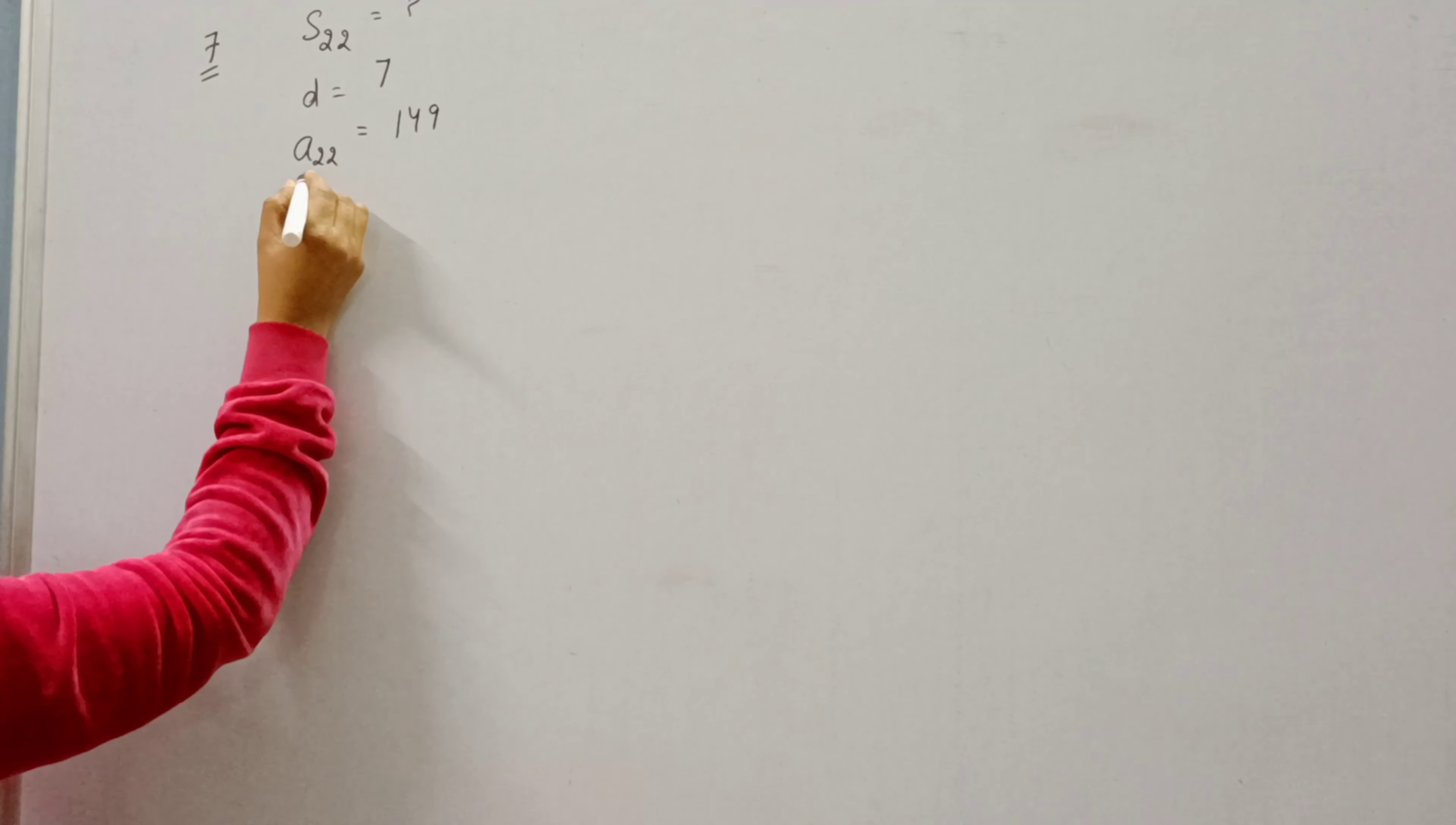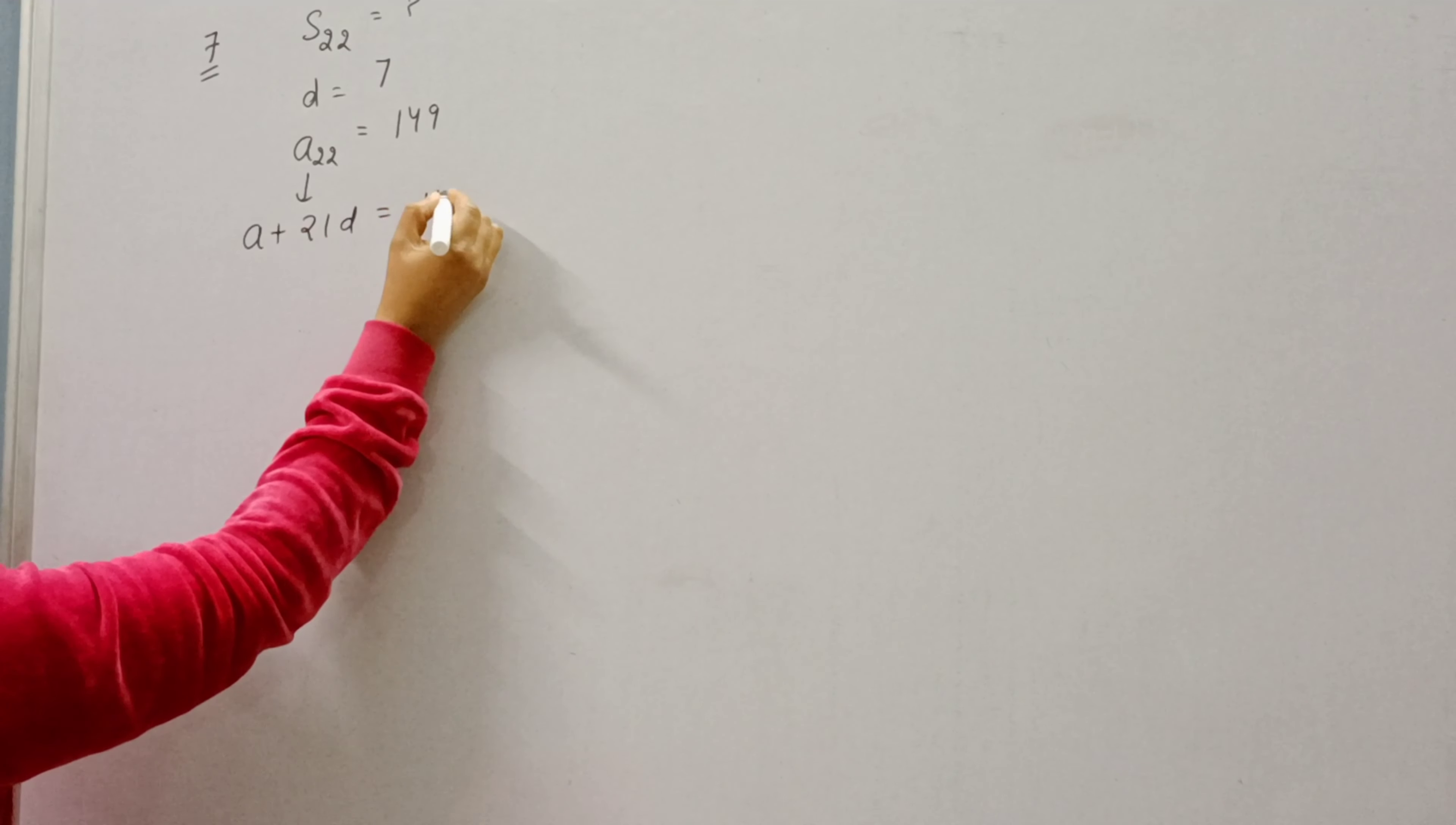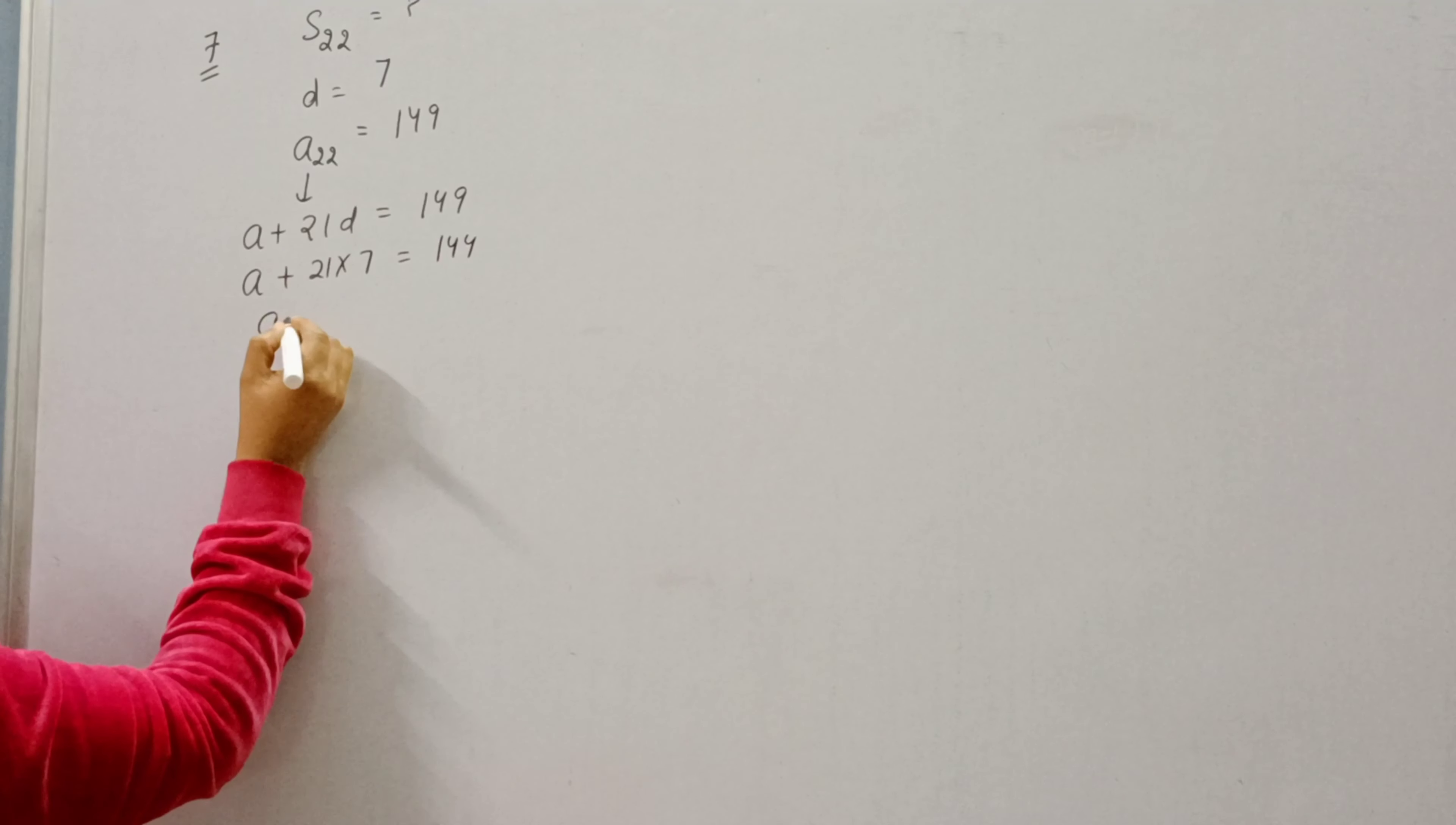Now 22nd term is given, so we can write it as A plus 21D. A is not known to us but D is given to us, so first of all we will find A.